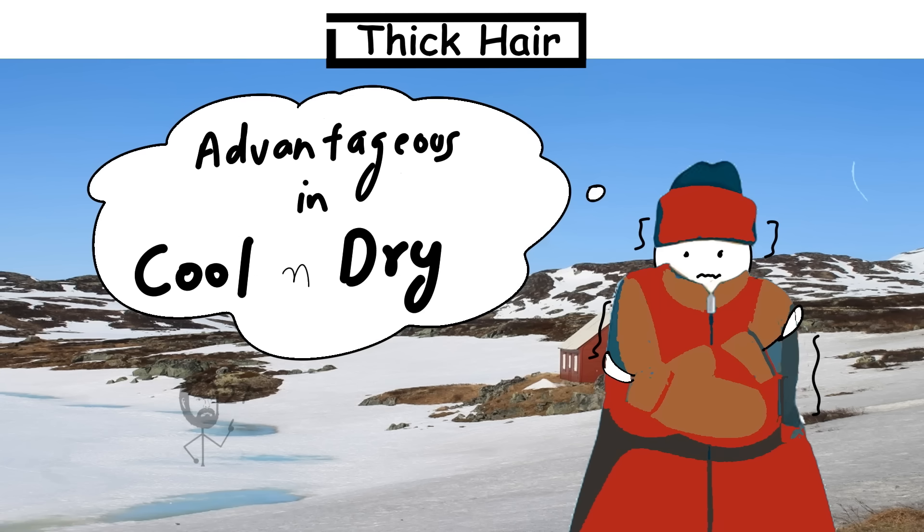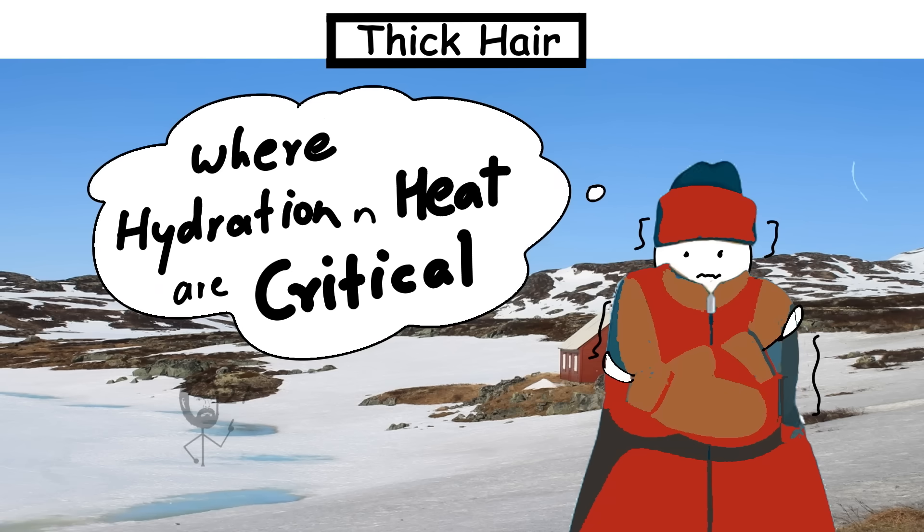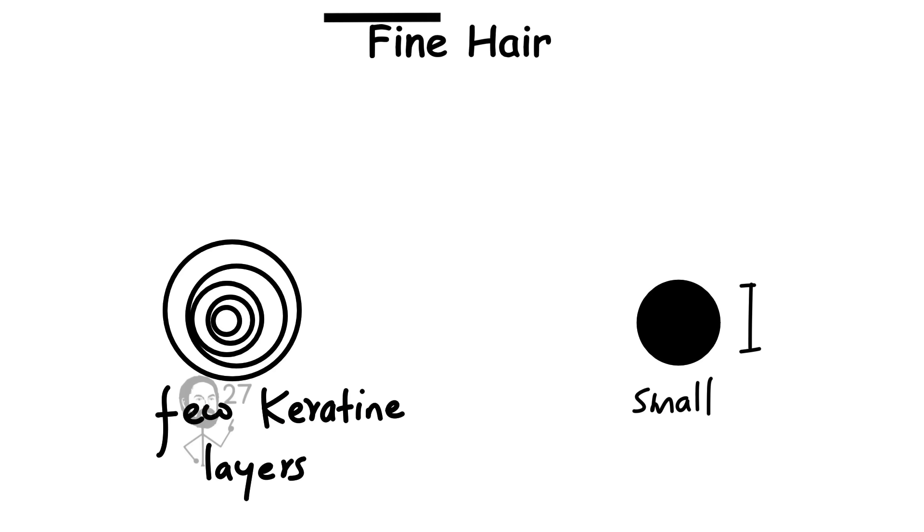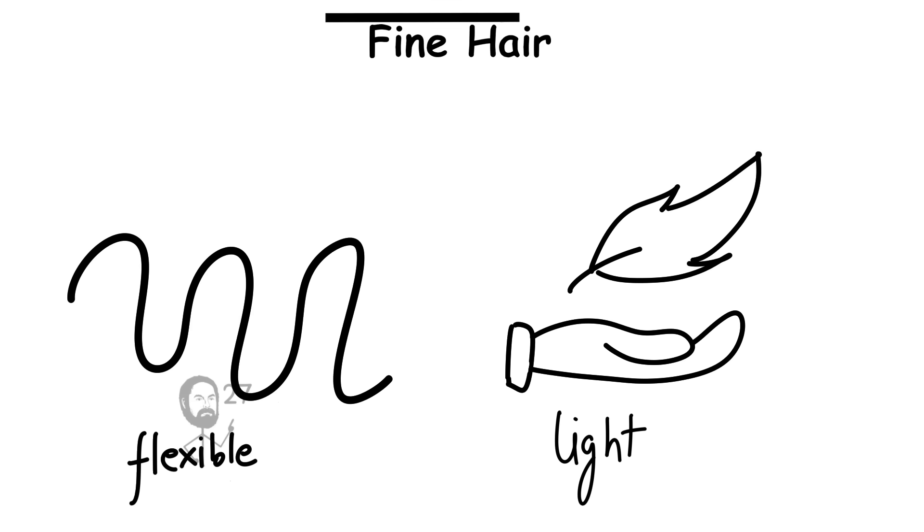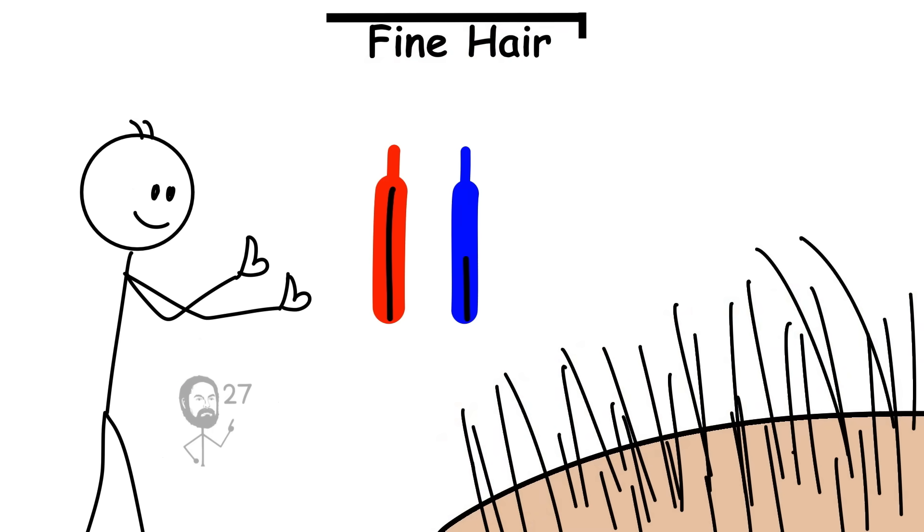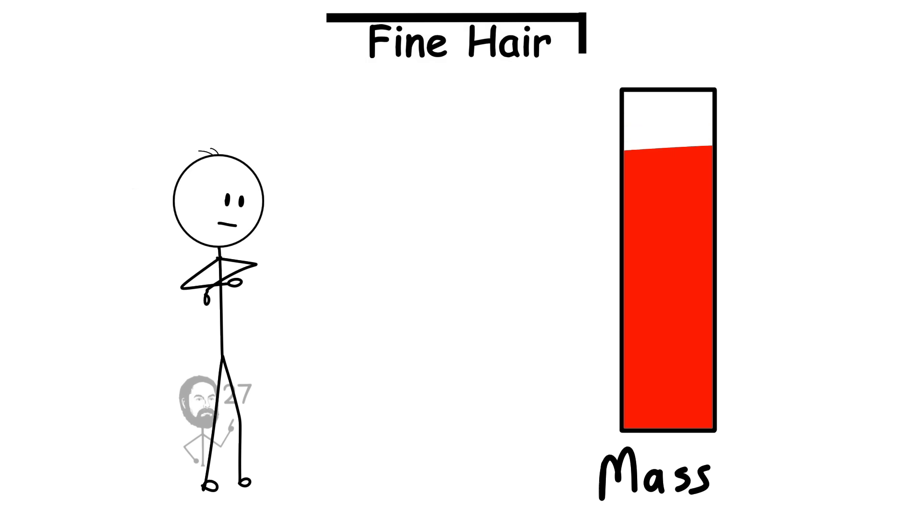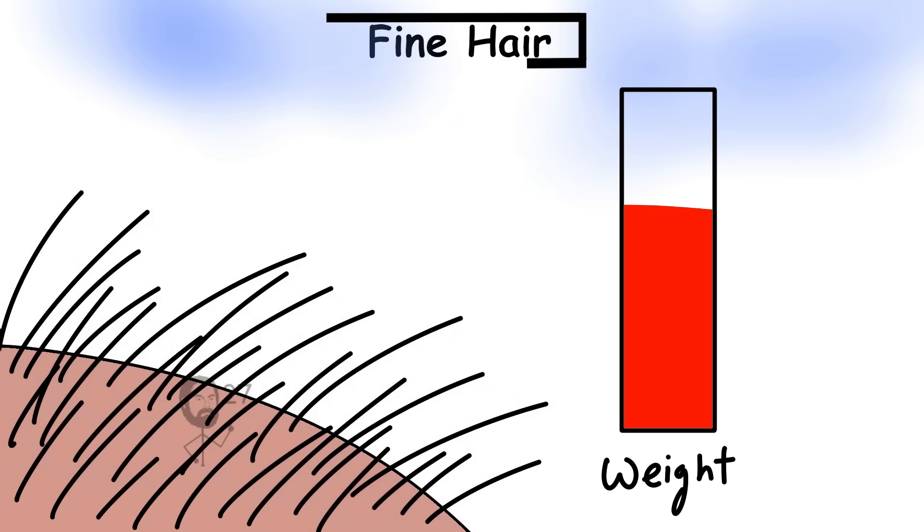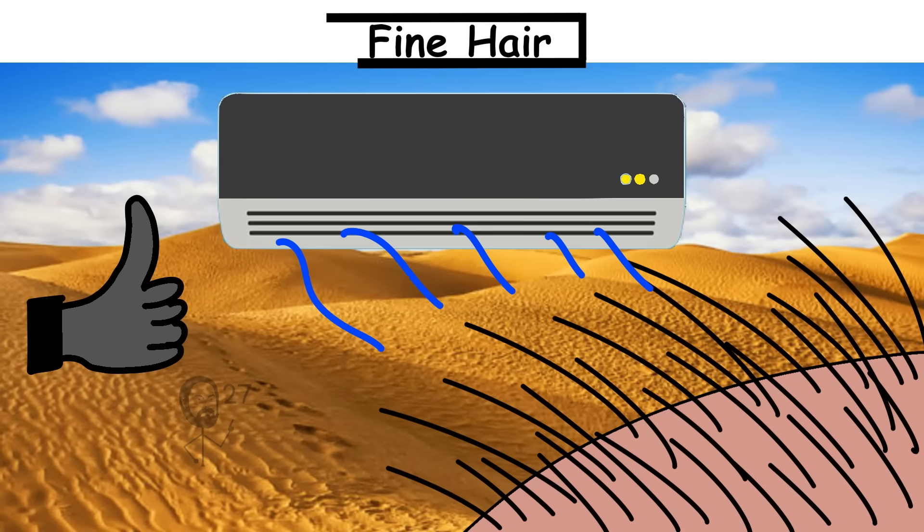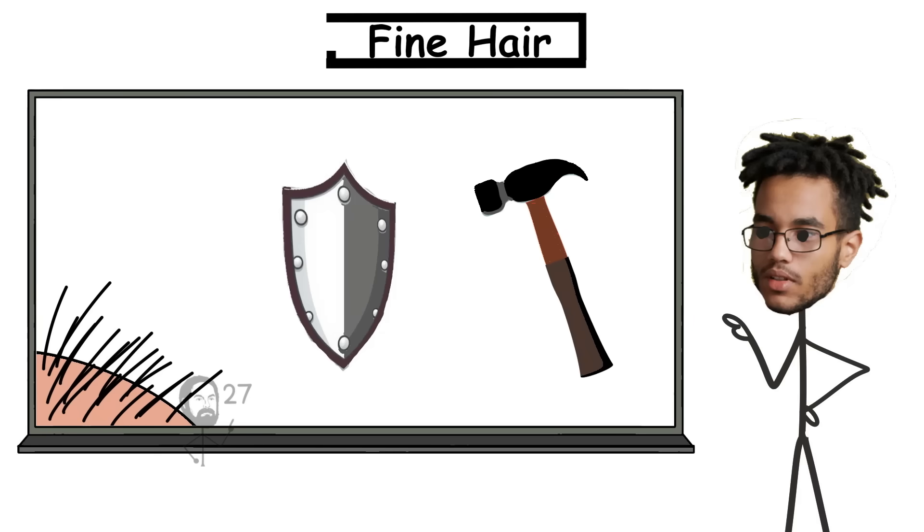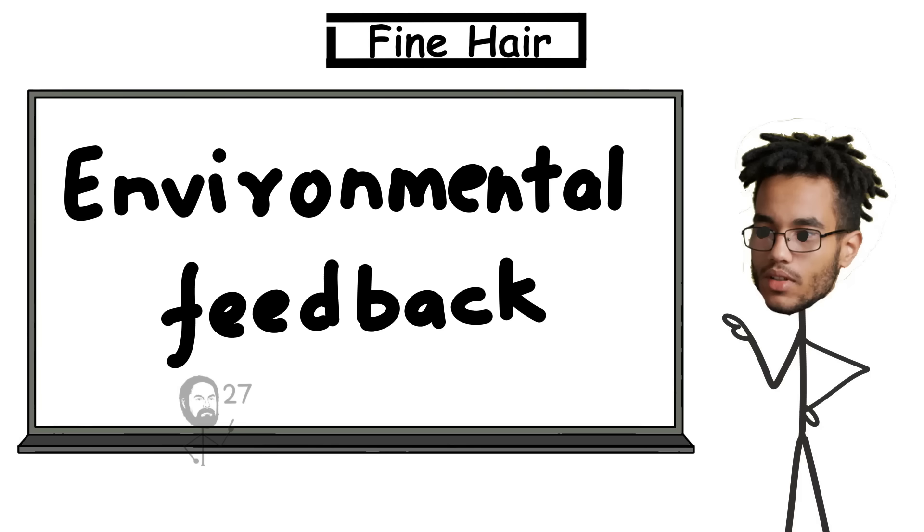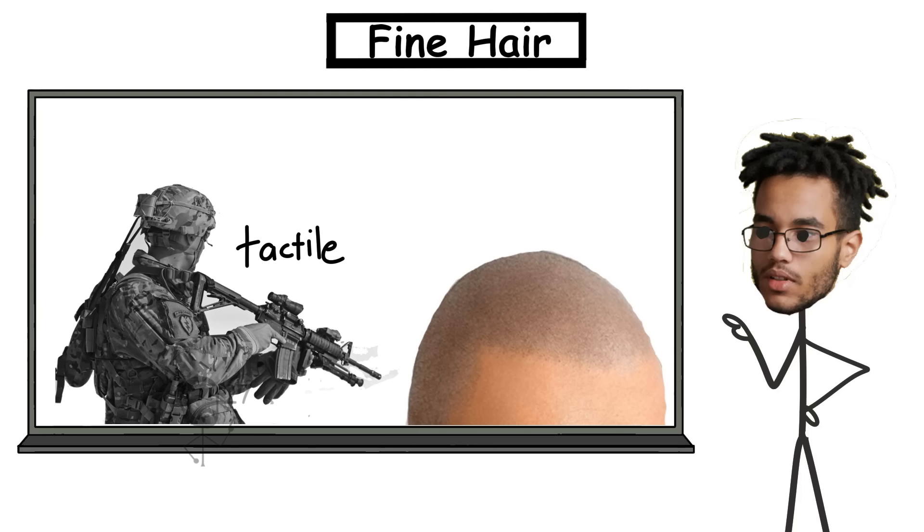Fine hair strands have a smaller diameter and fewer layers of keratin, making them lighter and more flexible than thick strands. While this reduces mechanical strength, it also allows heat to escape more efficiently from the scalp, supporting thermoregulation in warm or temperate environments. The reduced mass means fine hair dries quickly, accumulates less weight when wet, and offers minimal thermal insulation, useful in climates where cooling is more important than heat retention. While it may require more protection from breakage, fine hair functions as a highly responsive, low-density covering, optimized for cooling and environmental feedback, due to the increased tactile sensitivity of the scalp.